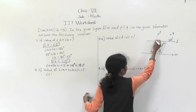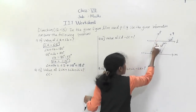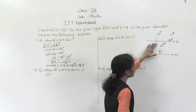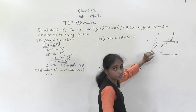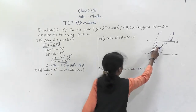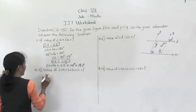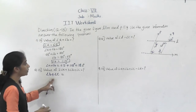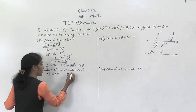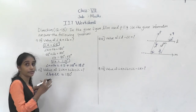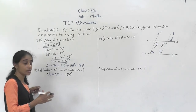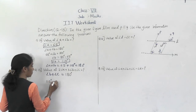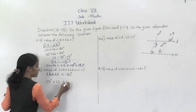Looking at the figure, these two lines are parallel, and this is the transversal. Interior angles made by the same side of the transversal are supplementary. So angle B plus angle C equals 180 degrees. With angle B equal to 115 degrees, we get angle C equal to 180 minus 115.